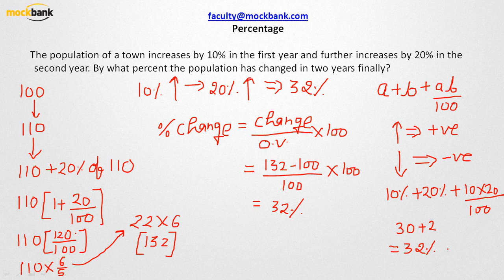If instead both years had decrements, A = −10% and B = −20%, the answer would come out as −28%. Be mindful: if the population increases by 10% then 20%, the answer is +32%; if it decreases by 10% then 20%, the answer is −28%. The two scenarios give different results.